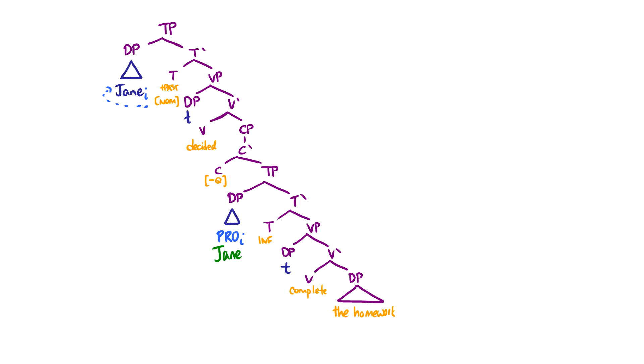Also, let's just assume Jane goes here, and then Jane wants to move up to the top TP. So Jane moves up here. Then the question is, what do we do with spec VP of decided? What would we put in there? Because that would have to move up, and we'd get Jane Jane decided to complete the homework, and that wouldn't be good. The other problem is that then it would have, well, maybe not two theta roles in this case, because it would only get the theta role from complete in this position, but then we'd still have to account for the theta role from decided. So this is the big PRO workaround for English.